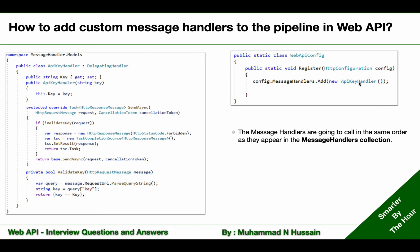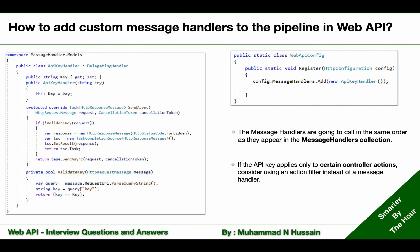This custom message handler assumes we are doing API key validation for all requests and all action methods in the Web API. What if the API key applies only to certain controller actions? In that case, consider using an action filter instead of a message handler. I have already discussed action filters in detail in previous questions.